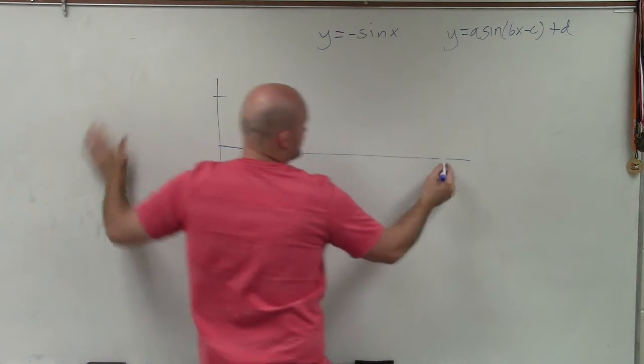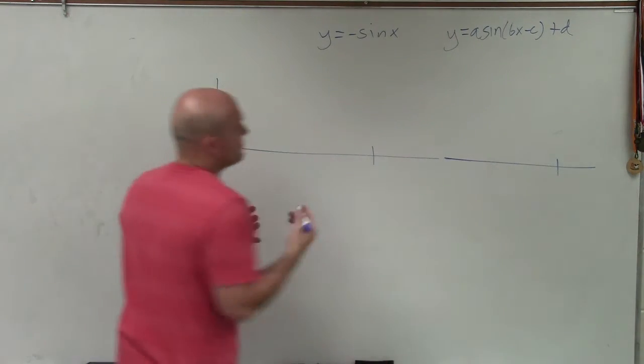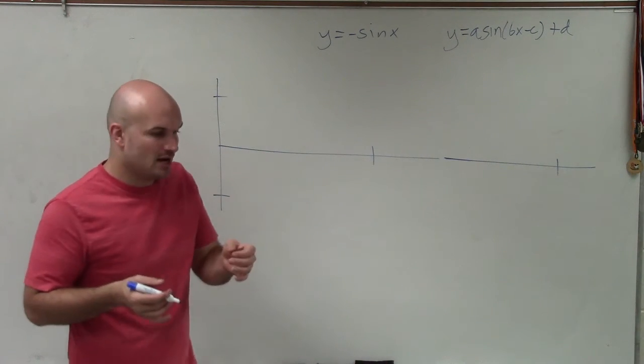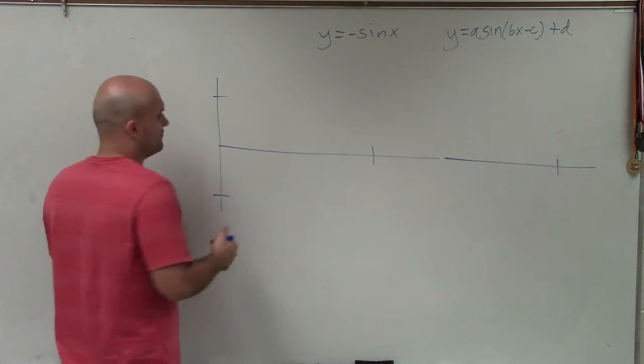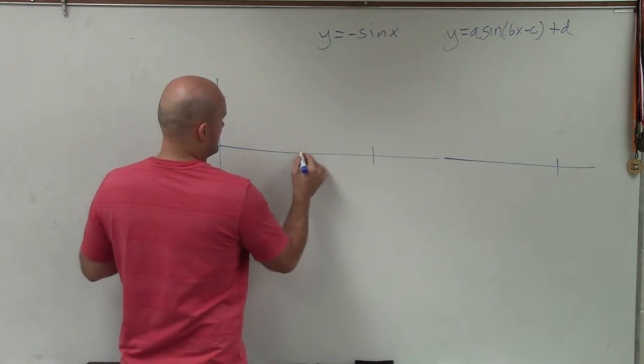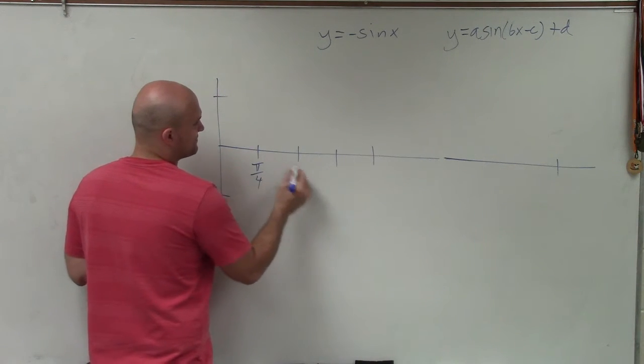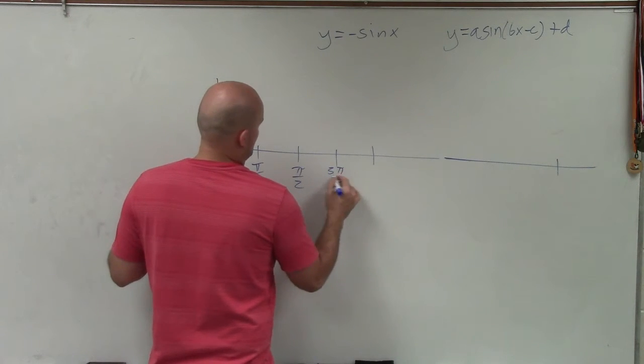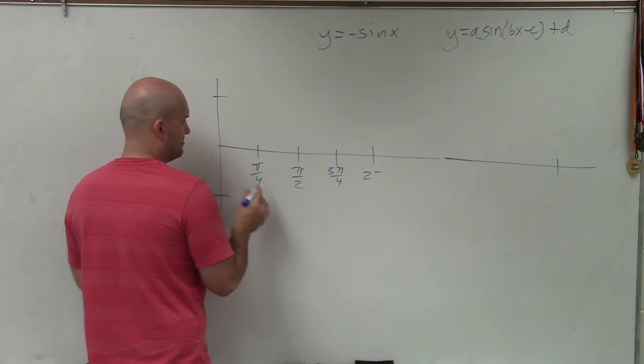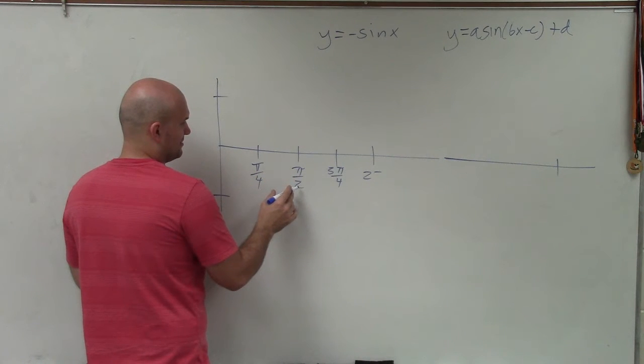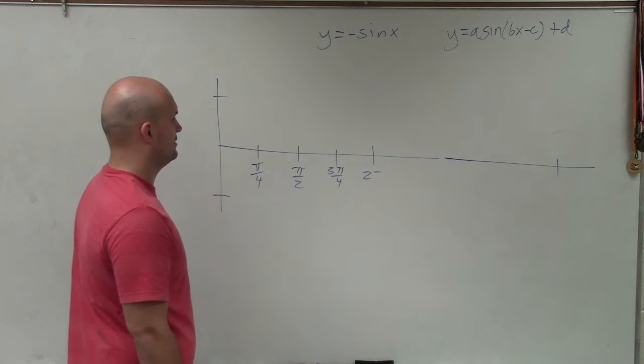Actually, let's do two periods. So let's do 2π, 4π. And remember, the minimum and the maximum all start at a scale of 4. So the scale for the parent graph is π/2. π/2, 3π/2, 2π.